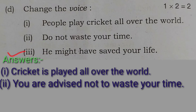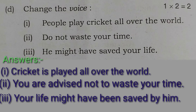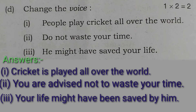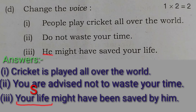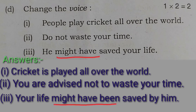The third sentence is: 'He might have saved your life.' Toh iska passive voice hoga: 'Your life might have been saved by him.' 'Your life' yeh object hai, isko passive voice mein subject ki jagah le aaye. 'He' active voice mein subject hai, isko passive voice mein 'by' lagakar object bana diya - toh 'he' ka objective case 'him' hoga. 'Might have' change hokar 'might have been' ho gaya. So passive voice: 'Your life might have been saved by him.'